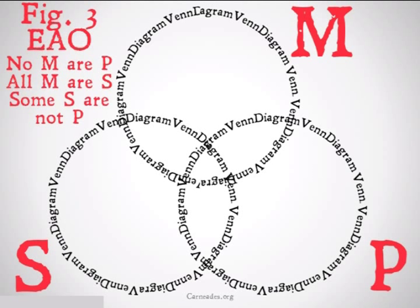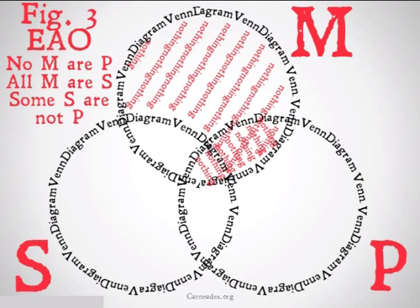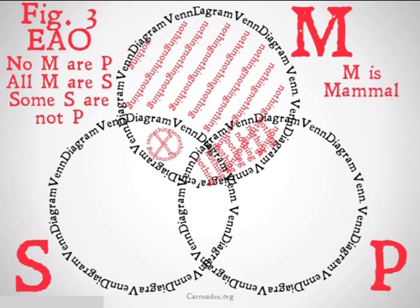First, Figure 3, E-A-O: No M are P, all M are S, therefore some S are not P. We'll fill in 'no M are P' and 'all M are S.' We'll see that this is not going to be valid for Boole — there's no X anywhere, and we need an X for our O statement at the end to be true. However, we see that there is one circle that only has one area open: that M circle. So we'll put the X with a circle around it in that one spot left over.